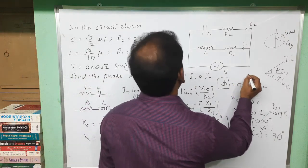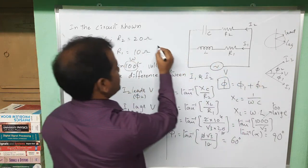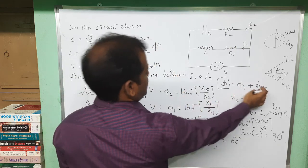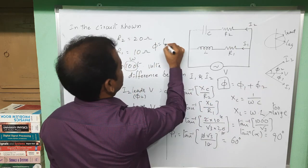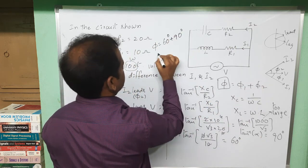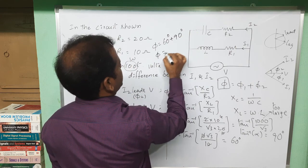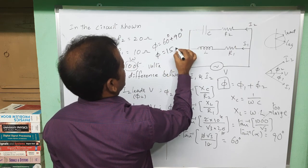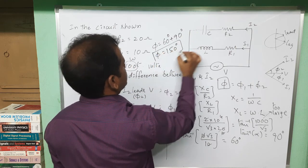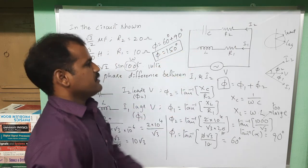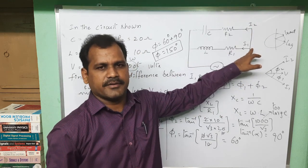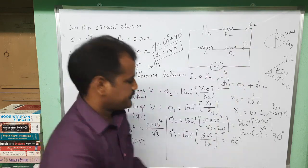Therefore, the total phase difference phi equals phi1 plus phi2 = 60 degrees plus 90 degrees = 150 degrees. This is the phase difference between i1 and i2 in the given circuit. Thank you.